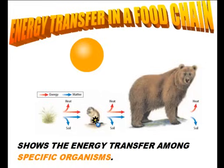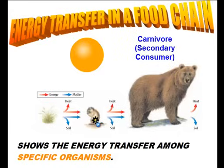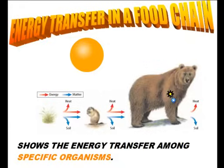Then, unfortunately for the herbivore, it's going to get eaten by another predator — mainly a bear. So the energy inside the herbivore is going to get transferred into the bear. A food chain is pretty much a straight-line representation of where energy goes from one organism to the next.